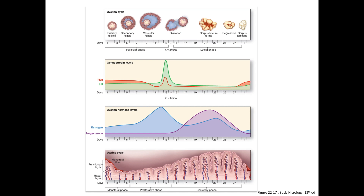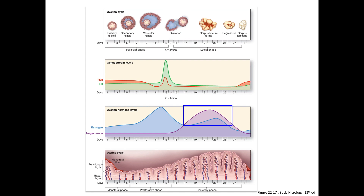This cartoon is provided for review as it nicely illustrates the ovarian cycle. You need to pay particular attention to the changing levels of the pituitary and ovarian hormones. You should be able to link these changing levels to the important events in ovarian follicle and oocyte development, as well as to the changes in the uterine endometrium in response to ovarian hormones. For example, estrogens are the predominant ovarian hormone during the proliferative phase, while progesterone predominates during the secretory phase. It is the drop in progesterone levels that triggers the menstrual cycle.